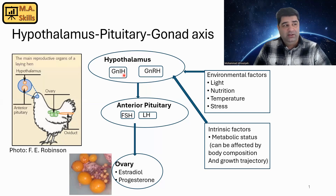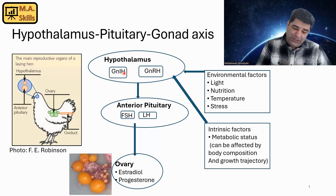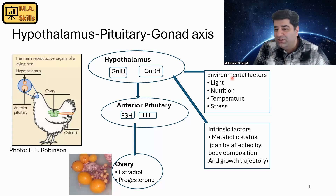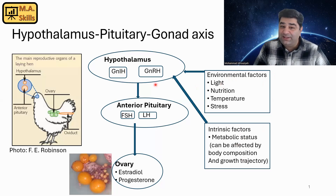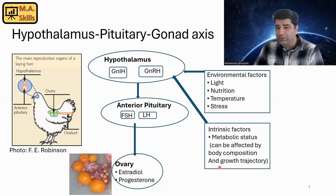GnIH — gonadotropin-inhibiting hormone — is like the brake pedal. Whenever you need to stop the car you hit the brake pedal. So if the hypothalamus produces GnIH, it hits the brake pedal for the reproductive axis, which means it stops laying and stops the HPG axis. Today I'm going to emphasize on environmental and intrinsic factors that can affect the gas pedal or the brake pedal — specifically we're looking for activation of GnRH.